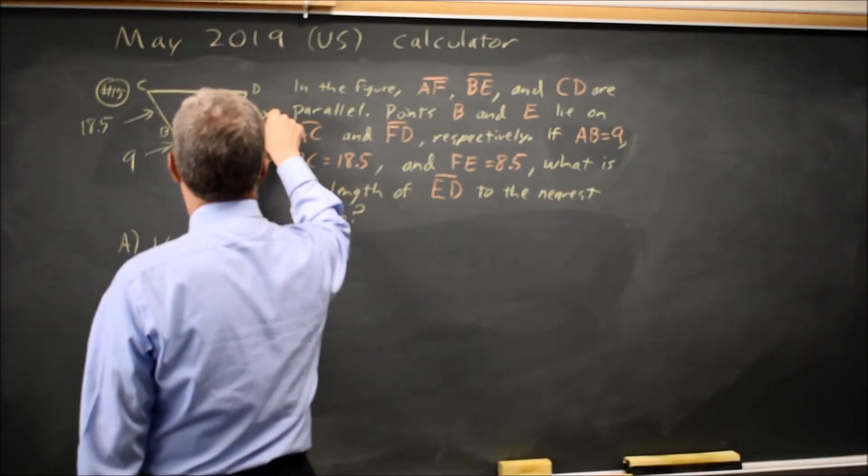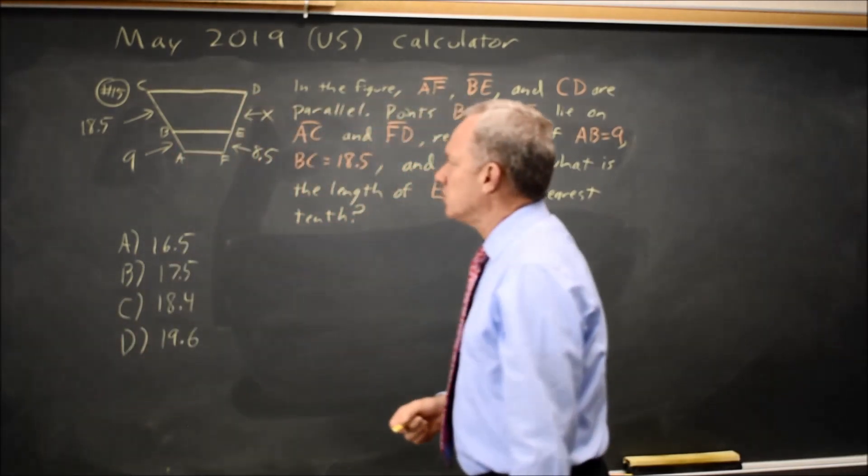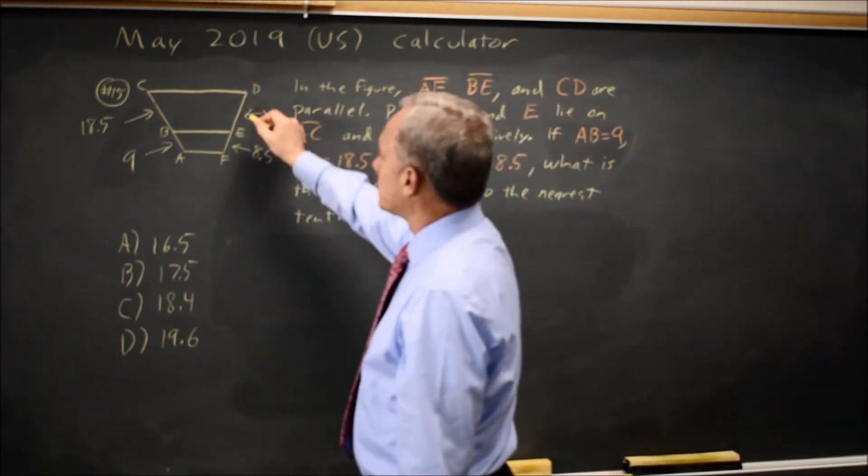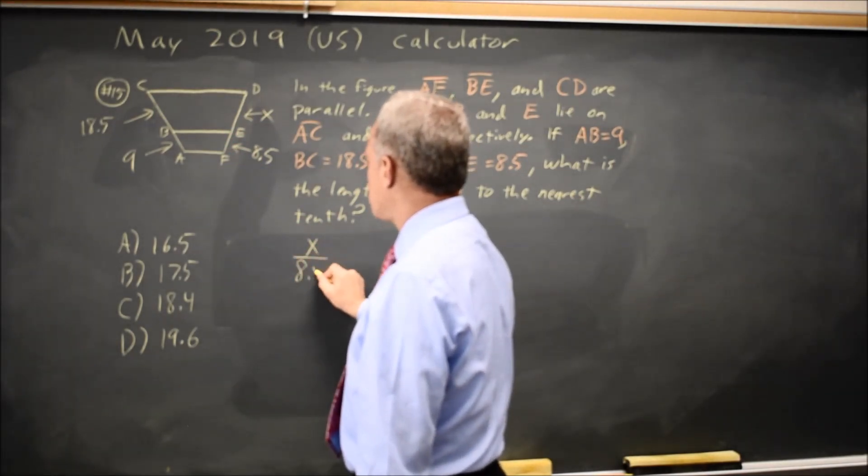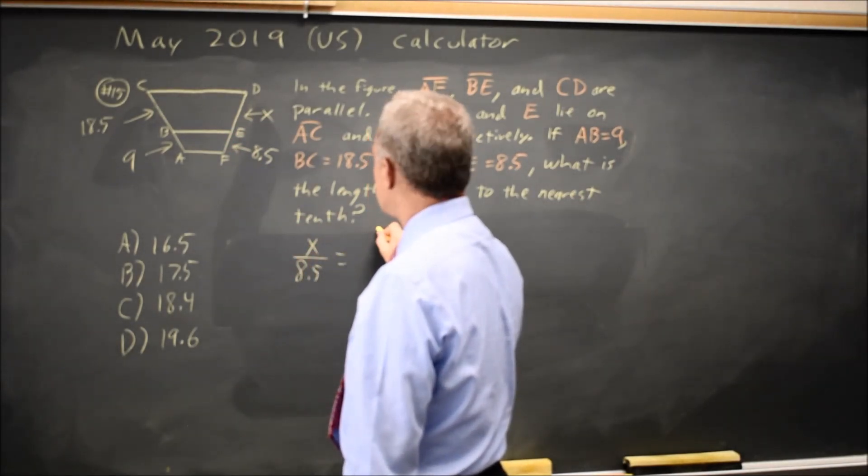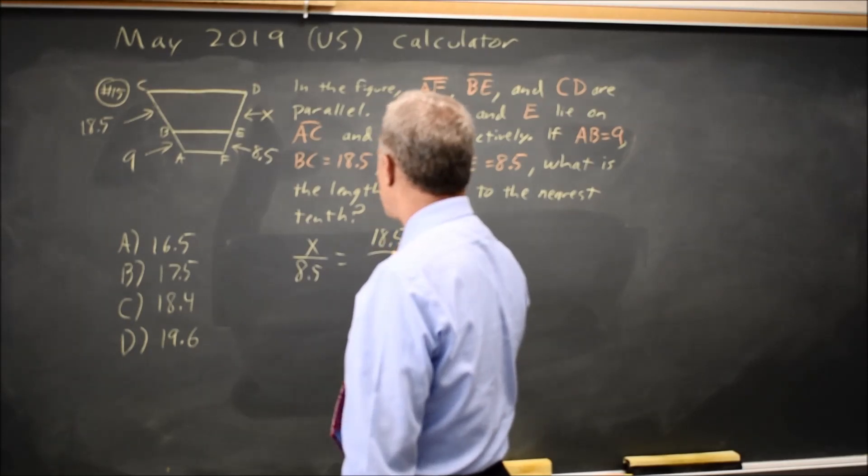and I'm going to call this length X, so I only need one letter instead of two. I can set a proportion, since these are parallel lines, that X over 8.5 equals 18.5 over 9.